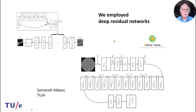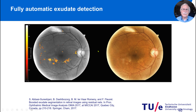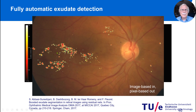We employed deep residual networks. Residual networks have a feedback loop and compare a processed result with the original, with many concatenations of different network blocks. This network made it even possible to do fully automatic exudate detection without having to indicate all the particular pixels — we could just indicate something is wrong on a particular retinal image, and it gives us the proper pixel-wise output: image-based input, pixel-based output. It was a really well-performing network.